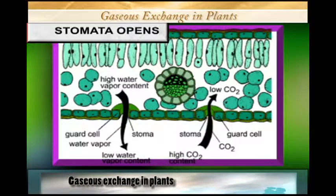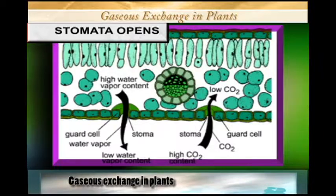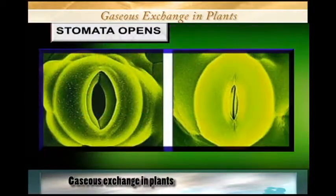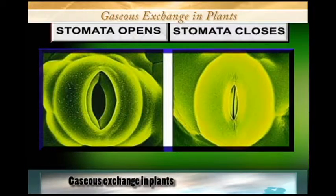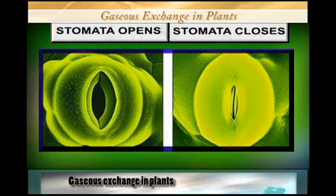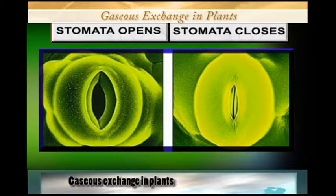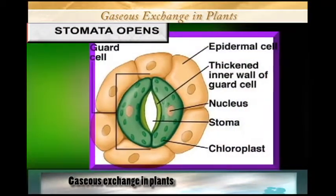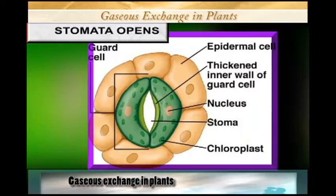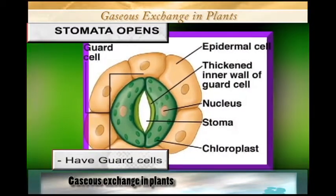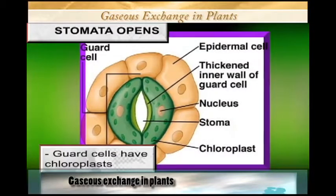Then the inner wall will bulge outwards. When the inner wall bulges outwards, the stomata opens, and when the stomata opens, gaseous exchange takes place. So gaseous exchange in plants takes place because of two processes: the opening of the stomata and the closing of the stomata. The stomata has guard cells, and the guard cells have chlorophyll.